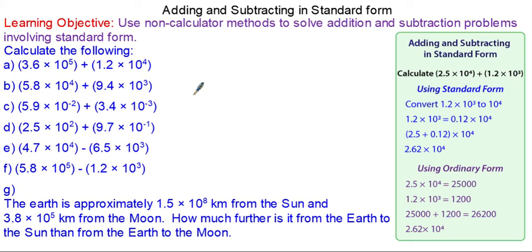In this lesson we're going to add and subtract with numbers in standard form. We begin with question a: 3.6 × 10⁵ is 360,000 and 1.2 × 10⁴ is 12,000, so we line them up.